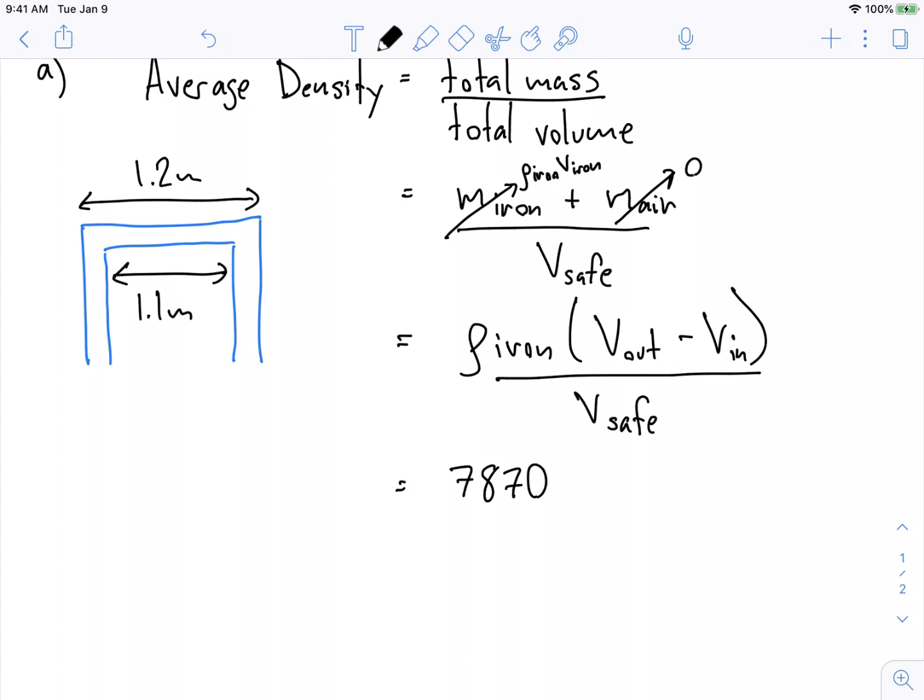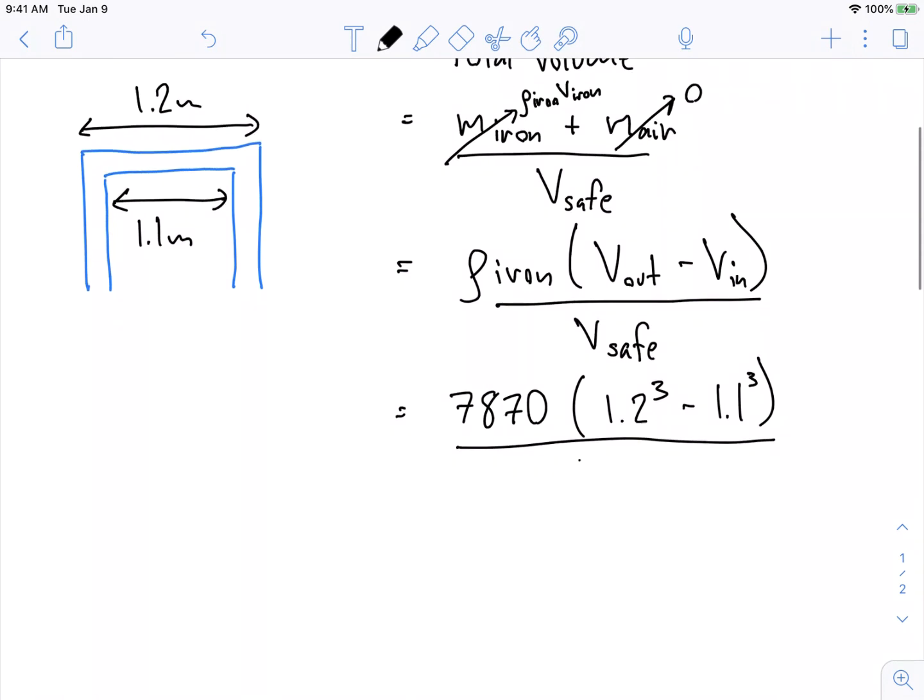But suppressing the units just to make our lives easy is a common thing. What's the outside volume of the safe? It's 1.2 meters cubed minus 1.1 meters cubed. And what's the total volume of the safe? Well, the total volume is 1.2 meters cubed, right?